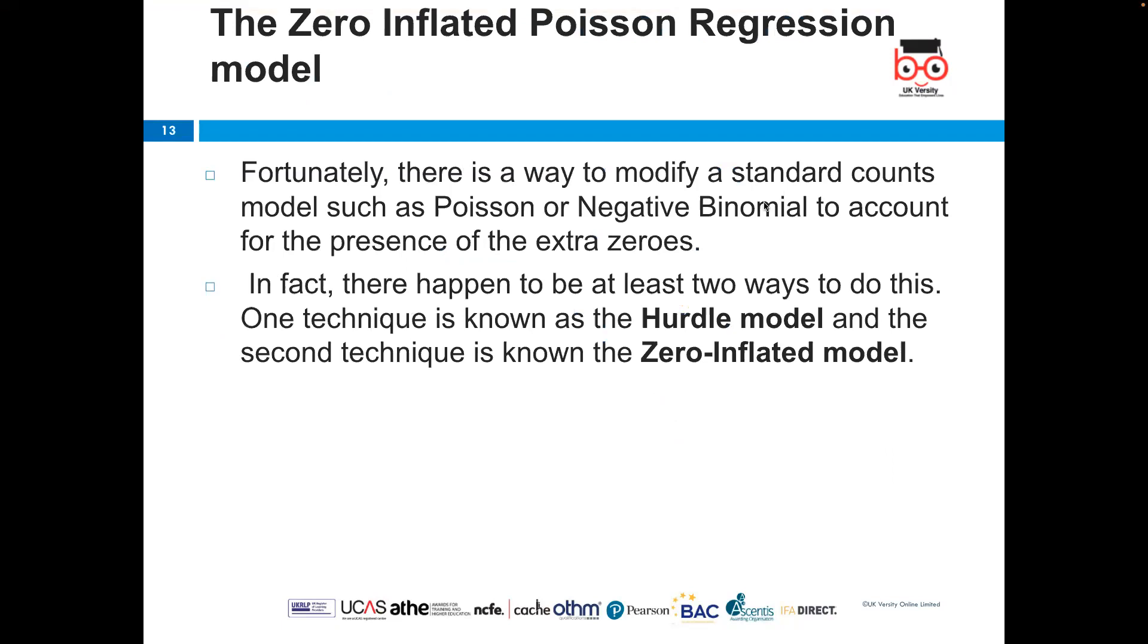The next topic is the zero inflated Poisson regression model. Fortunately, there is a way to modify a standard count model such as Poisson or negative binomial to account for the presence of the extra zeros. In fact, there happen to be at least two ways to do this. One technique is known as the hurdle model and the second technique is known as the zero inflated model.